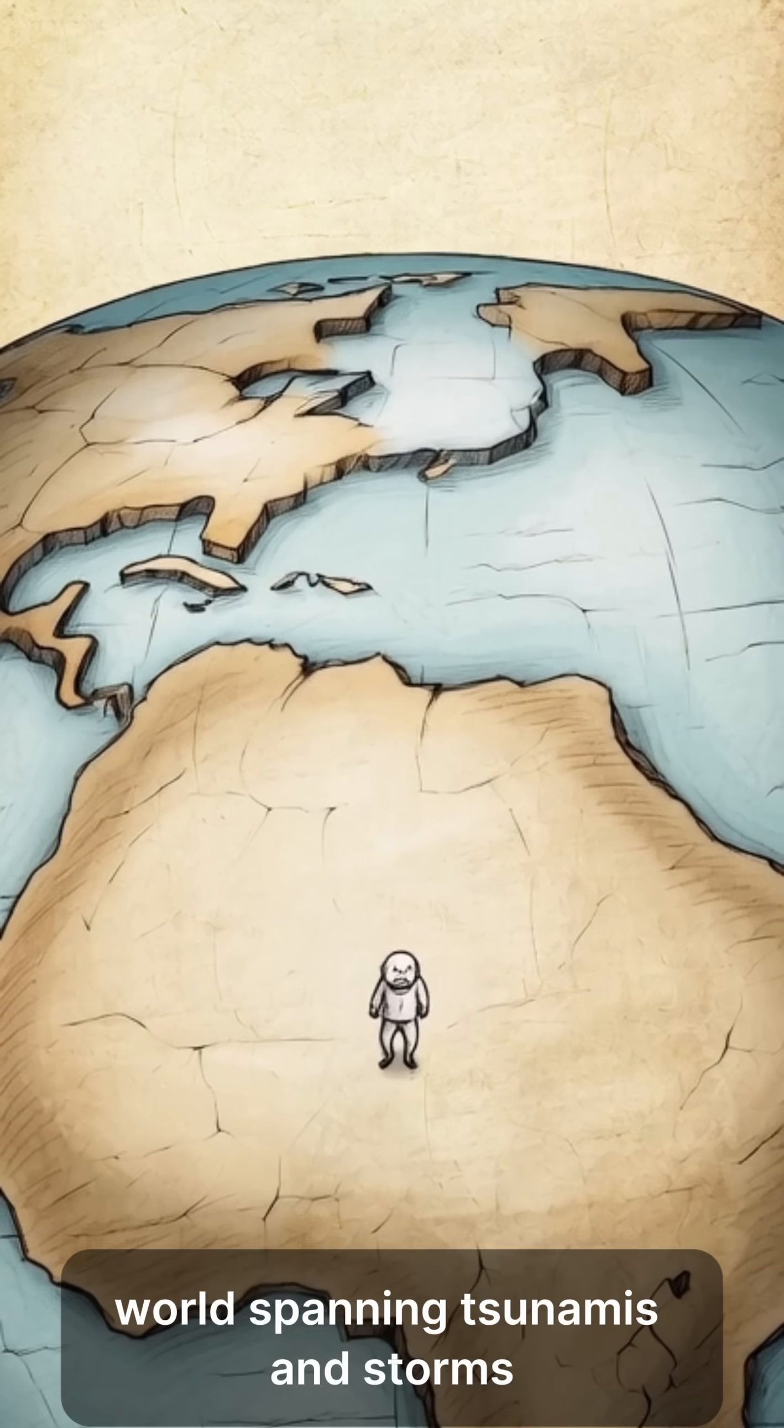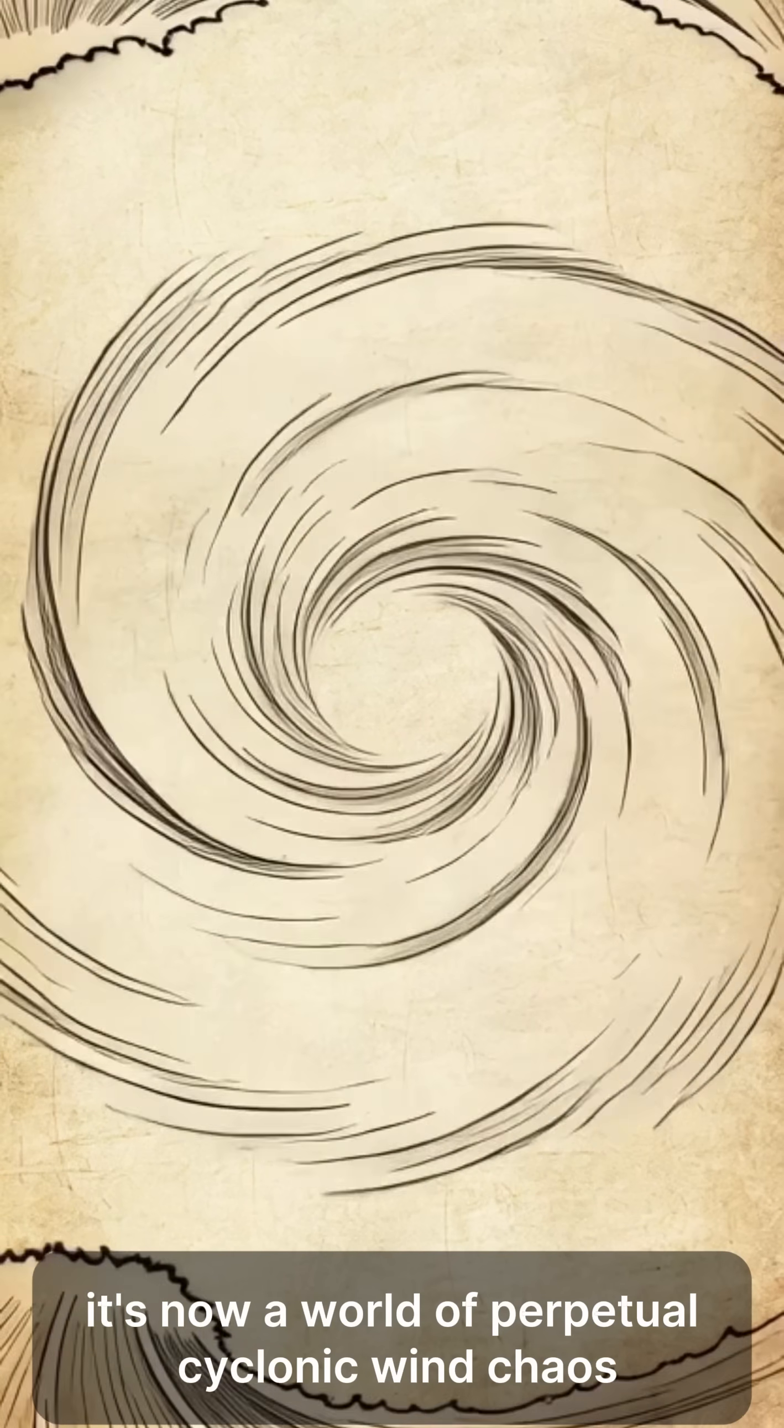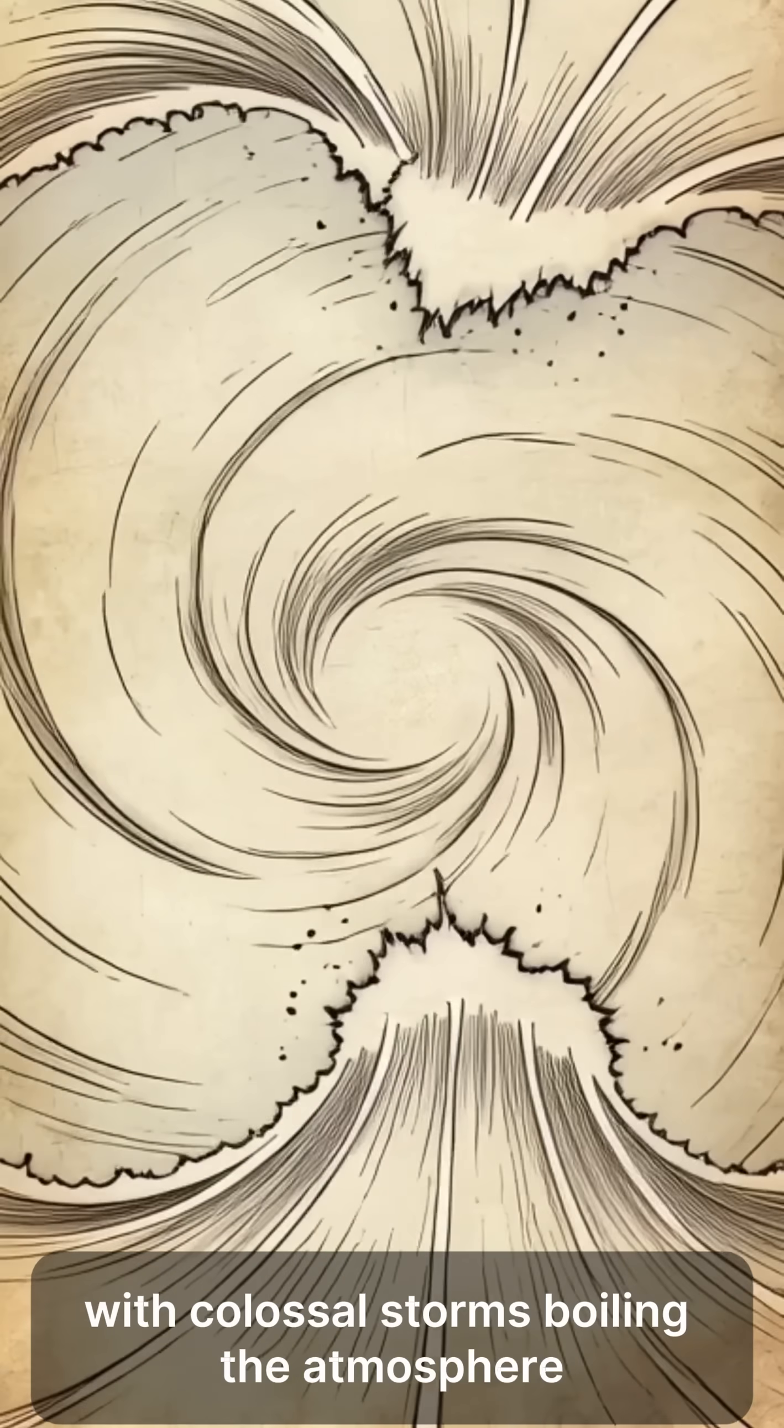The remaining water would generate constant world-spanning tsunamis and storms due to the insane rotation speed. Forget the old climate. It's now a world of perpetual cyclonic wind chaos with colossal storms boiling the atmosphere.